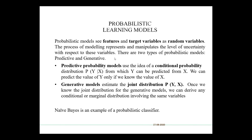There are two kinds of probabilistic models: predictive and generative. In predictive probability models, we use the idea of conditional probability — we say P(Y|X), that is the probability of Y given X. We know the probability of Y can be predicted from X. A generative model estimates the joint probability distribution P(Y, X). Once we know the joint distribution, we can derive any conditional or marginal distribution involving the same variables. We will talk about all these models specifically in the lectures on generative models. An example of Naive Bayes is based on a probabilistic classifier.